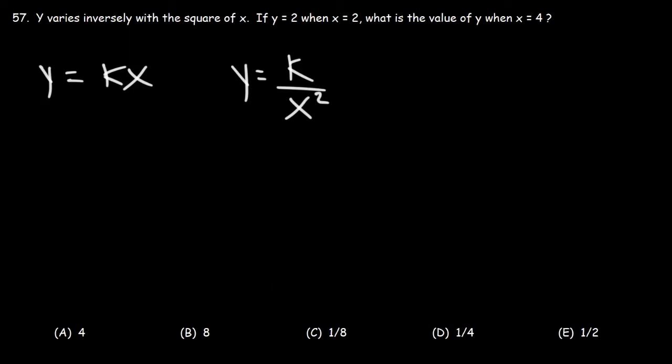So we're going to follow the same process that we used in the last example. Using this part of the problem, we are going to calculate k. And then once we have the value of k, we can plug in 4 into x and calculate the value of y.